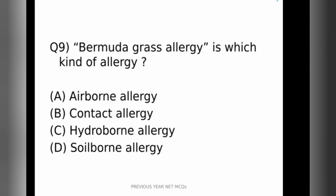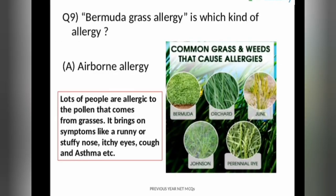Next question number 9 is Bermuda grass allergy is which kind of allergy? Airborne allergy, contact allergy, hydro bone allergy or soil bone allergy? The correct answer is airborne allergy. So Bermuda grass allergy comes from one of the grass species known as Bermuda which the pollen are affecting the organisms.